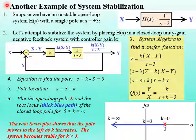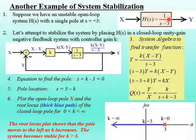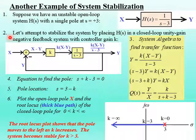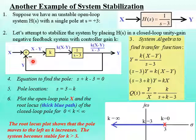Here's another example of system stabilization using linear feedback. Suppose we have an unstable open-loop system given by H(s) equal to one over S minus three. We see immediately that the pole is at S equals positive three, in the right half plane, so this represents an unstable system. We're going to attempt to stabilize it by placing H(s) in a closed-loop unity-gain negative feedback system. Notice this time we have a controller gain K, and the feedback loop itself has unity gain, indicated by that minus sign.